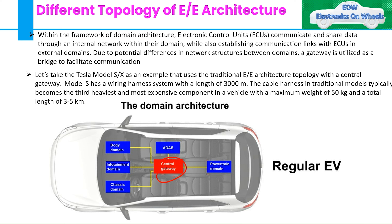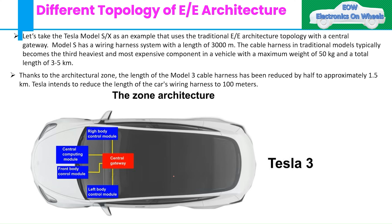Tesla decided to adopt the zonal architecture to save on wiring harness length, weight, and cost, and to simplify and speed up communication. In zonal architecture, ECUs are organized based on their location inside the vehicle and connected via zone controllers to a central computing module with large processing capacity that performs all computation regardless of function. Thanks to this architecture, the length of the Model 3 cable harness has been reduced by half to approximately 1.5 kilometers. Tesla intends to further reduce car wiring harness length to 100 meters.